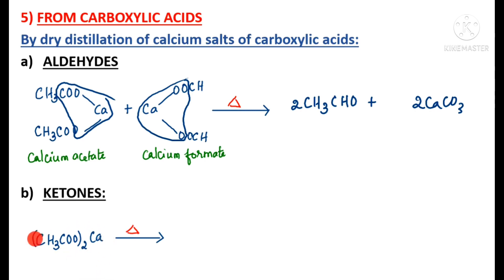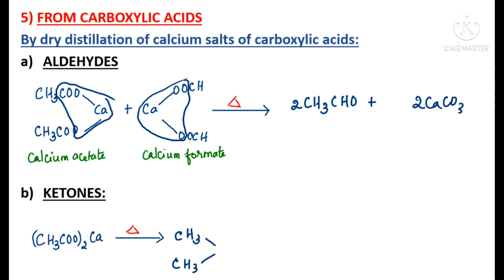Ketones can be obtained by the dry distillation of the calcium salt of a carboxylic acid alone. Calcium acetate when subjected to dry distillation produces acetone, CH3-C(=O)-CH3, along with the removal of calcium carbonate.